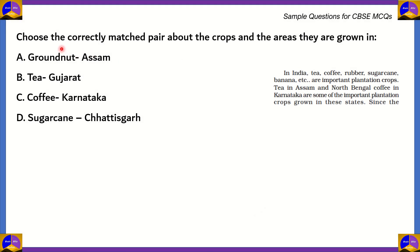Here comes our first question. Choose the correctly matched pair about the crops and the areas they're grown in. A: Groundnut in Assam, B: Tea in Gujarat, C: Coffee in Karnataka, D: Sugarcane in Chhattisgarh.